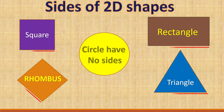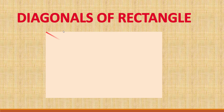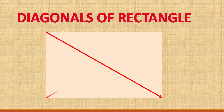The diagonals of a rectangle — this is the rectangle. These are the two diagonals of a rectangle. Similarly, the square also has diagonals.